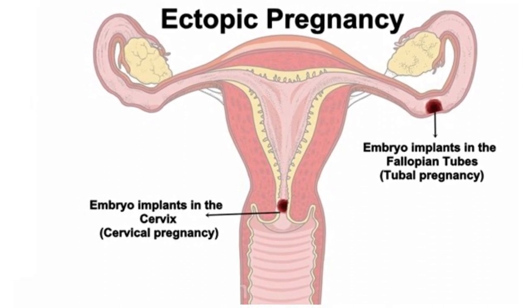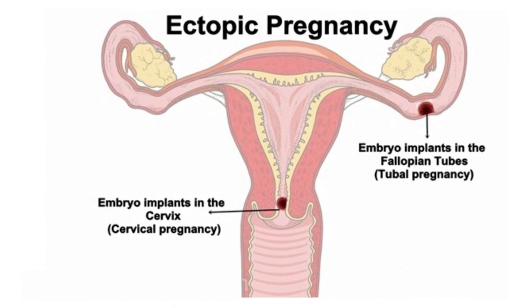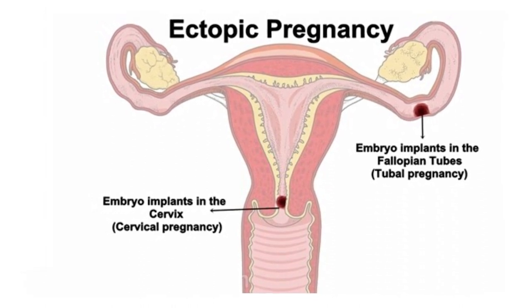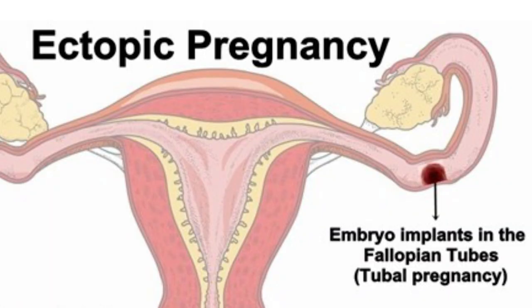The blastocyst in a normal condition must have reached the uterus, but for reasons unknown it may remain in the fallopian tube. The fallopian tube will not expand like the wall of the uterus, but the zygote will keep growing.